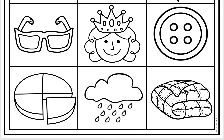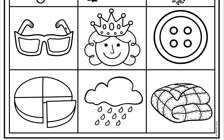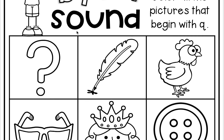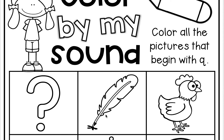Listen as I make the first sound in quilt. Coo. That's right — we need to color this picture. Pause the video and color in the picture. I just realized that instead of a feather, this is supposed to be a quill. So listen as I make the first sound in quill. Coo. Good work — we need to color this picture. Pause the video and color in the quill.